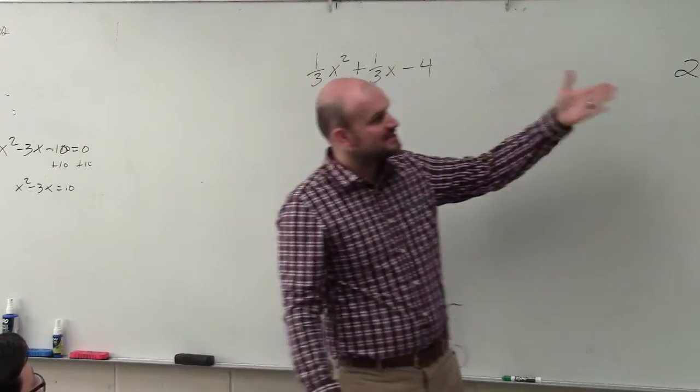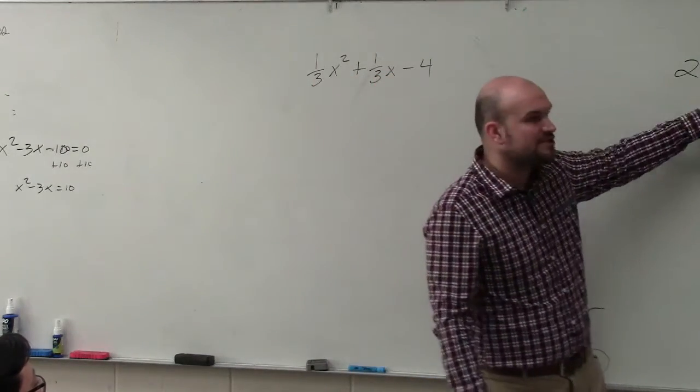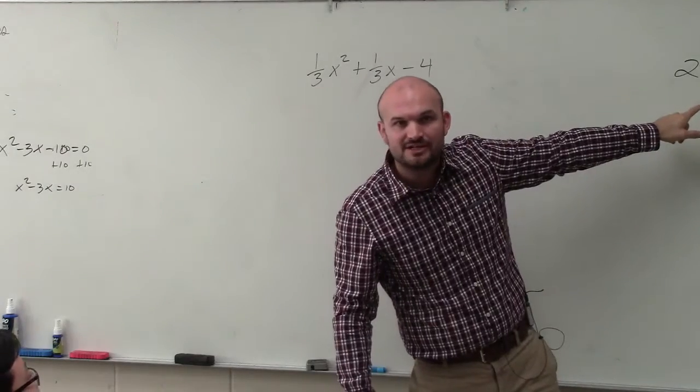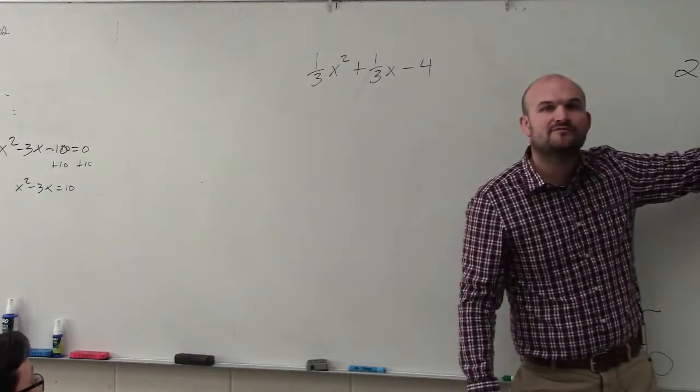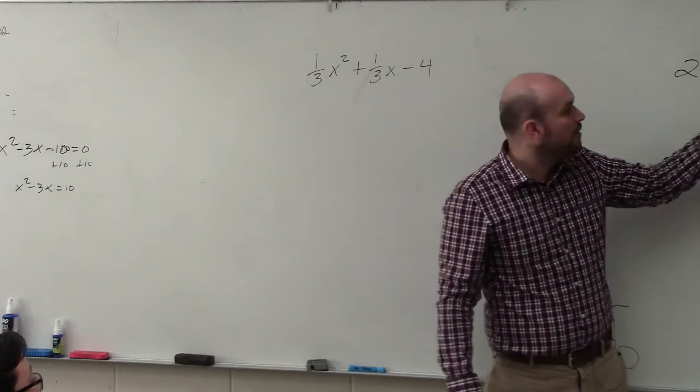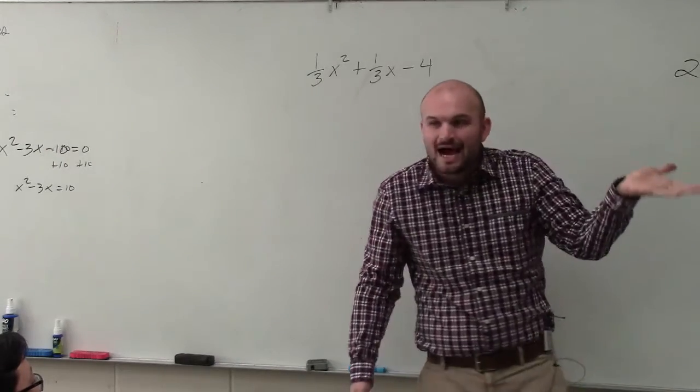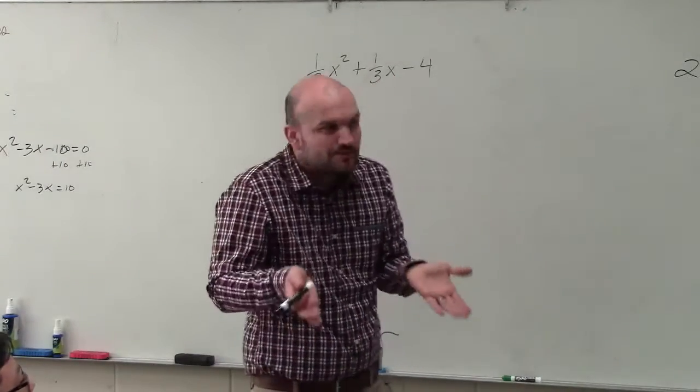But if you kind of follow the process, and when you guys look at the box method, basically what you're doing when you find your greatest common factor, when you're trying to decide that one factor that's the same, what you're basically doing is you're dividing out that greatest common factor. In reality, that's really what you're doing.